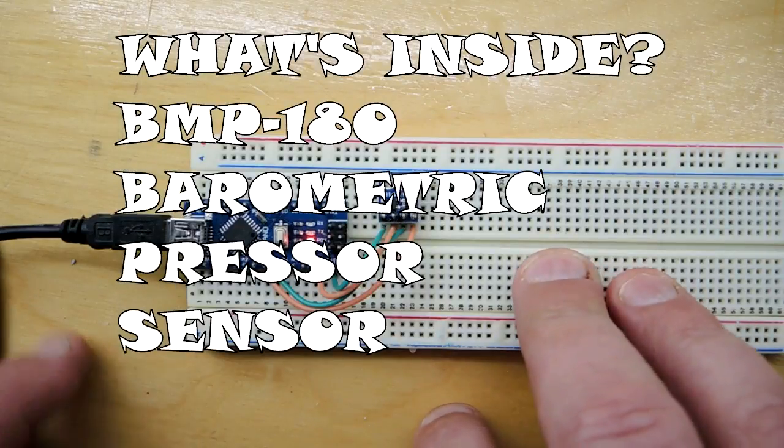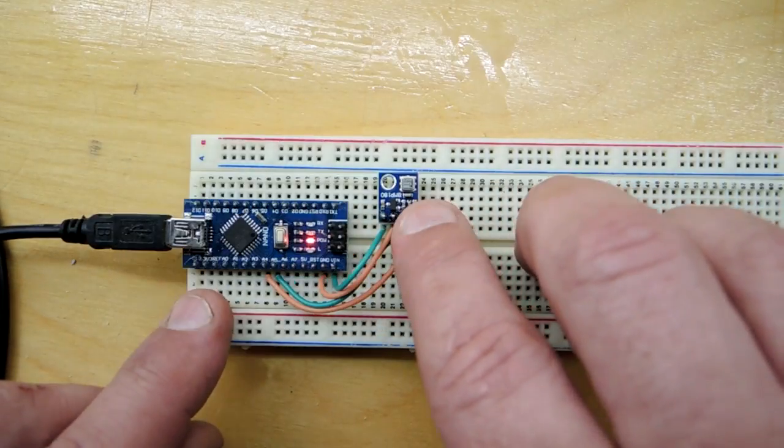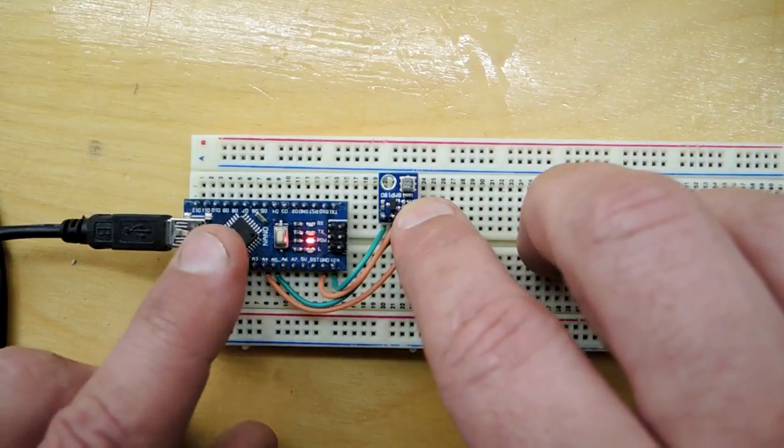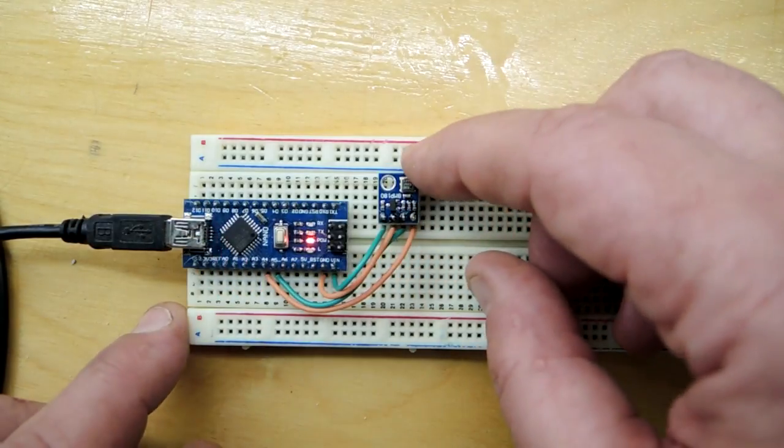Okay, another What's Inside video. Two circuit boards here. One's a sensor, it's called the BMP180. This is just an Arduino used to control it.